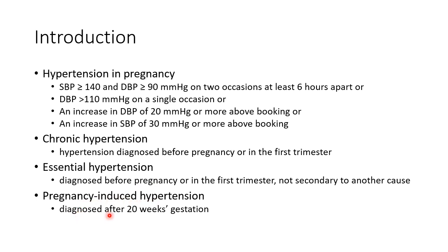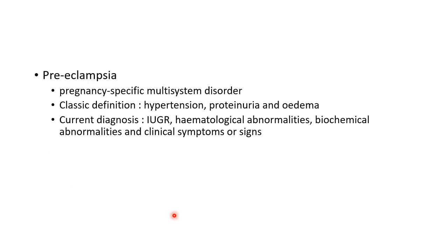Preeclampsia is a pregnancy-specific multi-system disorder. The classic definition involved hypertension, proteinuria, and edema — all three had to be present. The current diagnosis is based on intrauterine growth restriction, hematological abnormalities, biochemical abnormalities, and clinical symptoms or signs. If any of these are present, the patient can be labeled as preeclamptic.